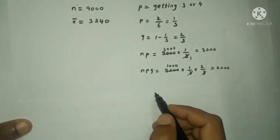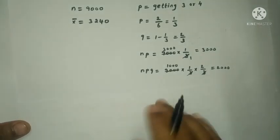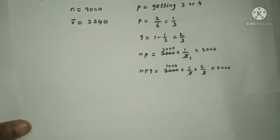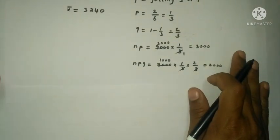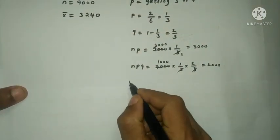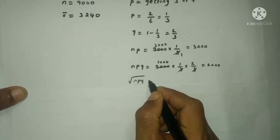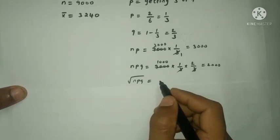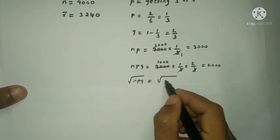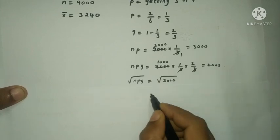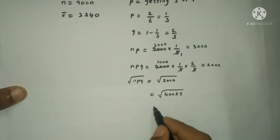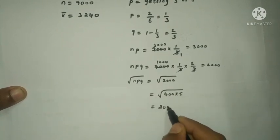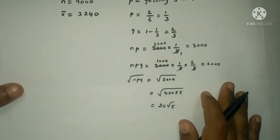Standard deviation is root of NPQ, that is root of 2000, which is 400 into 5. 400 rooted is 20, so 20 root 5.